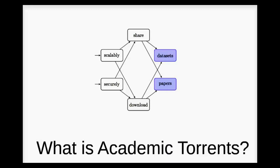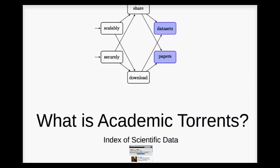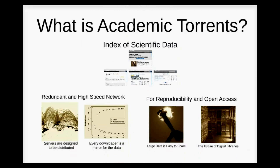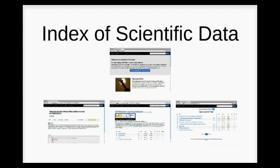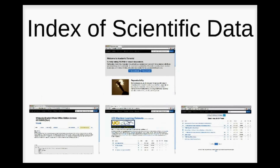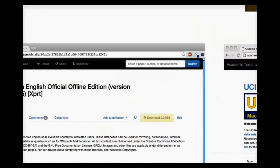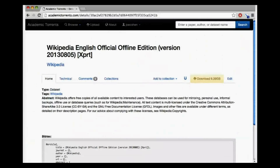What is Academic Torrance? Academic Torrance is an index for scientific data, a redundant and high-speed network, and the future of reproducibility and open access. As an index for scientific data, we provide a portal to show every entity in the system, such as the entire English Wikipedia.